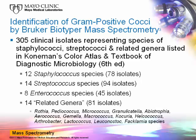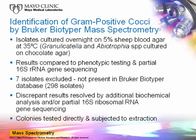We followed up with a second study of 305 clinical isolates representing staphylococci, streptococci, and related genera, including 12 Staphylococcus species, 14 Streptococcus species, 8 Enterococcus species, and 14 related genera including Rothia, Pediococcus, Micrococcus, Granulicatella, Abiotrophia, Aerococcus, Gemella, Macrococcus, Kocuria, Helcococcus, Arthrobacter, Lactococcus, Leuconostoc, and Facklamia. Isolates were cultured overnight on 5% sheep blood agar at 35°C, except Granulicatella and Abiotrophia, which were cultured on chocolate blood agar. Seven isolates not present in the Bruker Biotyper database were excluded, leaving 298 isolates.